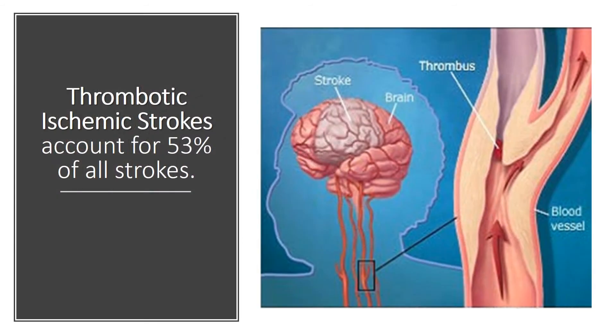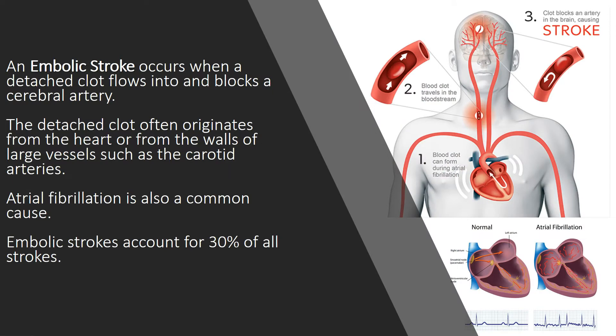Thrombotic ischemic strokes account for 53% of all strokes. An embolic stroke occurs when a detached clot flows into and blocks a cerebral artery. The detached clot often originates from the heart or from the walls of large vessels such as the carotid arteries. Atrial fibrillation is also a common cause. Embolic strokes account for 30% of all strokes.